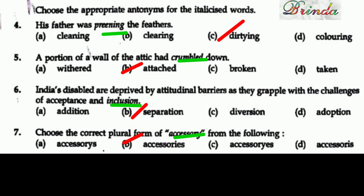Sixth question: 'India's disabled are deprived by attitudinal barriers as they grapple with the challenges of acceptance and inclusion.' The italicized word is 'inclusion' — meaning bringing them together. The opposite is separation. The options are addition, separation, diversion, adoption. Answer is separation.